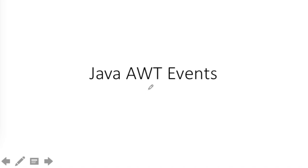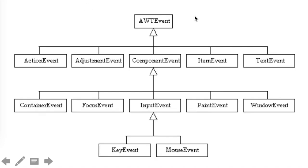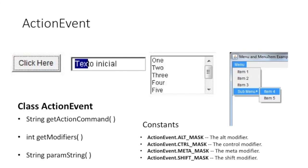In this video, let us see different events available in Java AWT. Here is the hierarchy of classes. At the top is AWTEvent, from which we have: ActionEvent, AdjustmentEvent, ComponentEvent, ItemEvent, TextEvent, KeyEvent, MouseEvent, and WindowEvent. We will see some of these events. All of these are classes that inherit from AWTEvent.